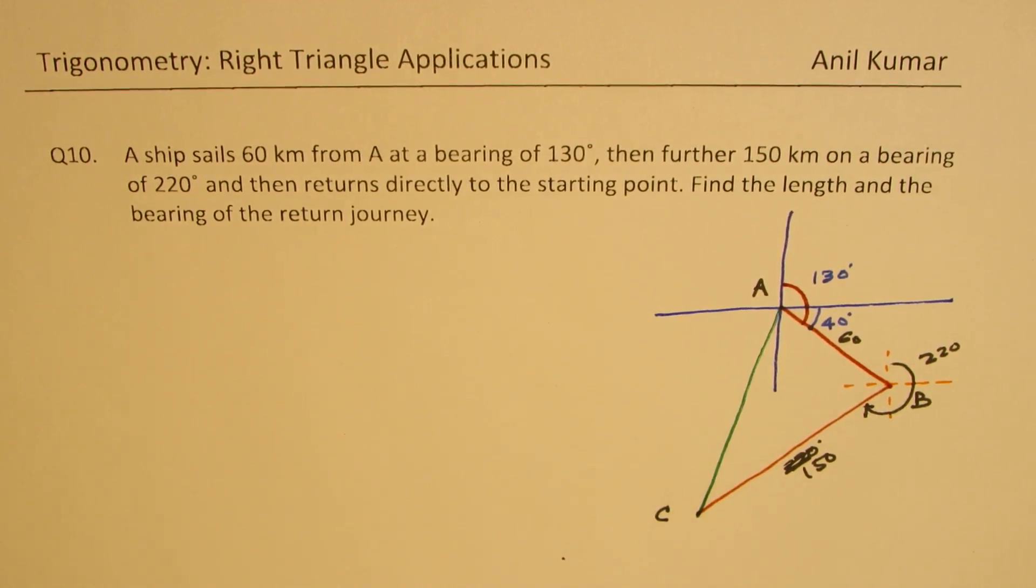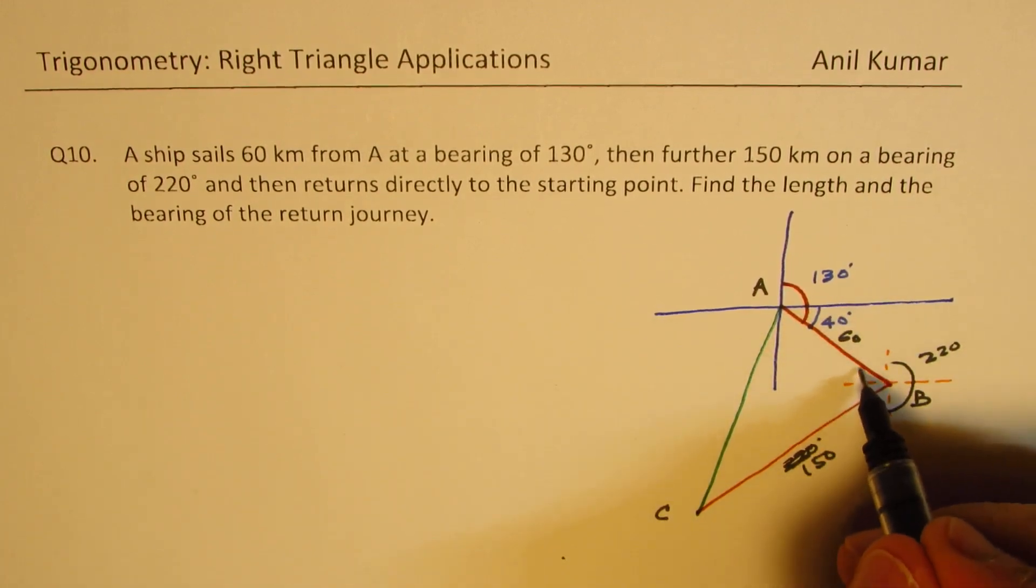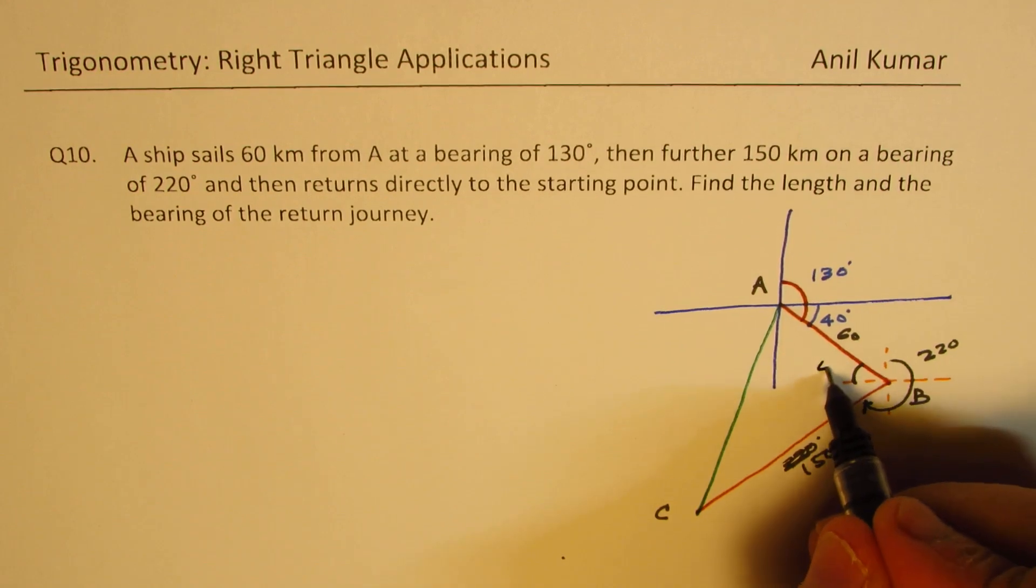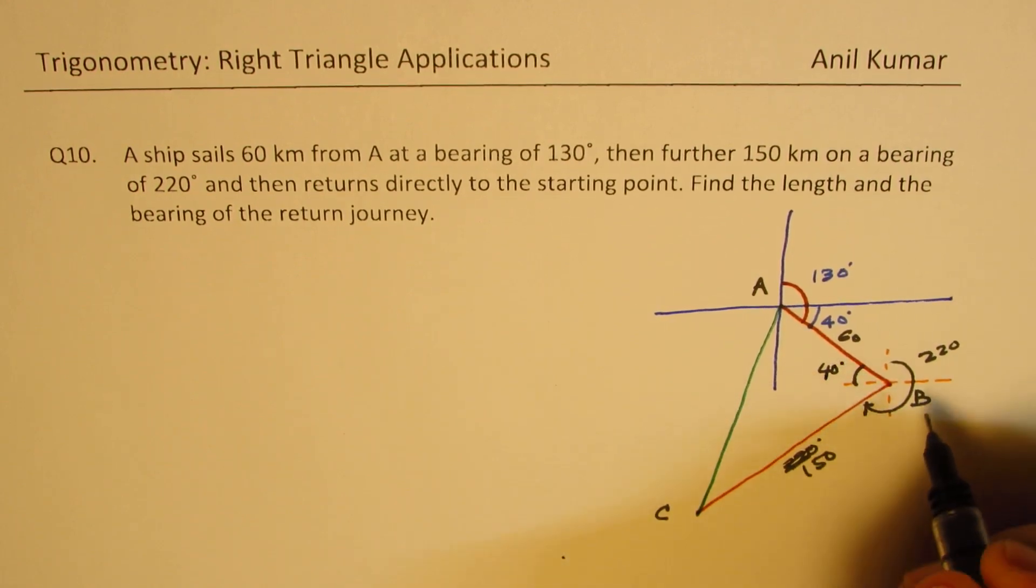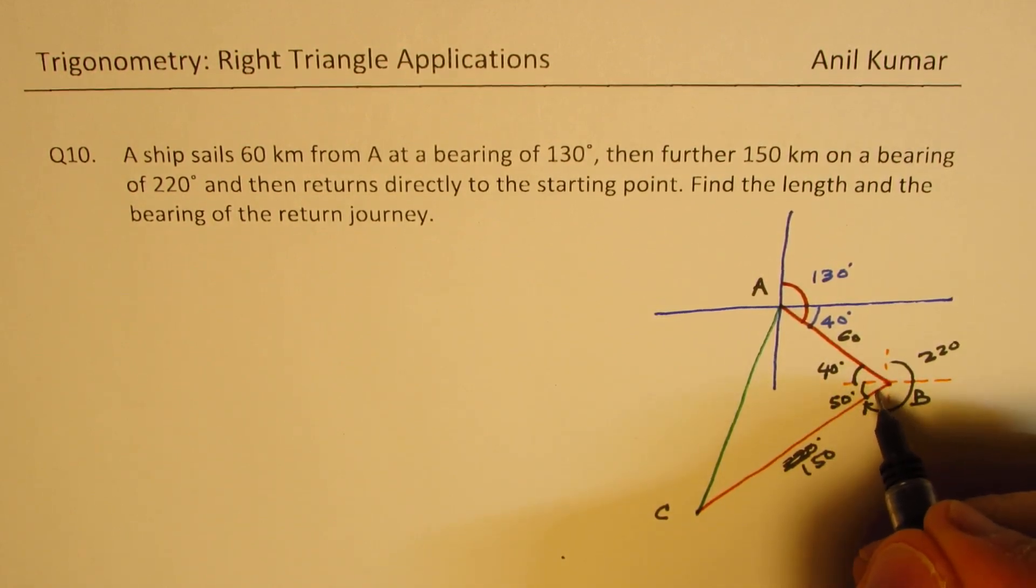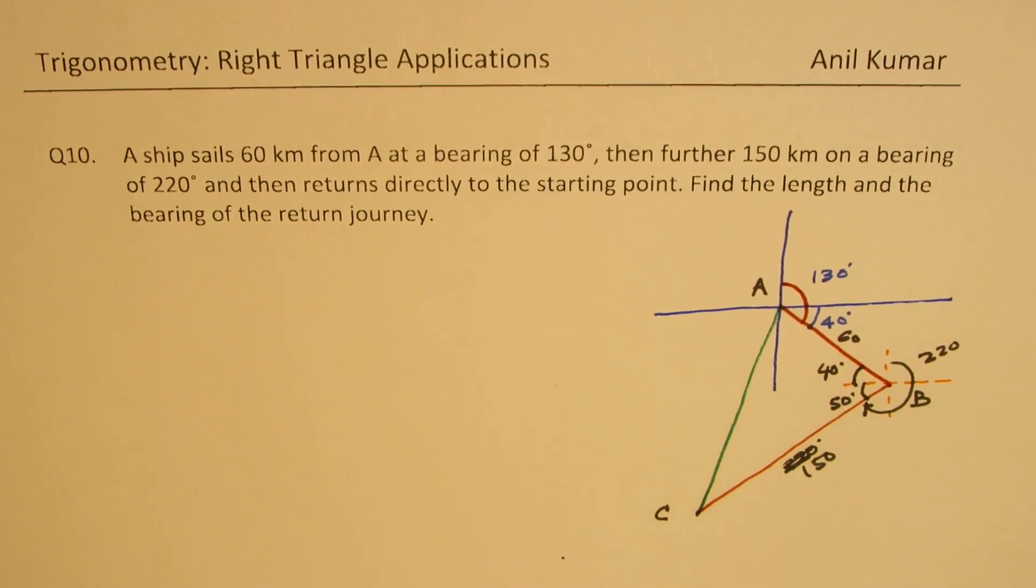Let's see the angles. So if this is 40, this angle here will also be 40. When we are saying 220, then it is 50 here, right? Now, 40 plus 50 is 90 degrees. So we have a 90 degree diagram.